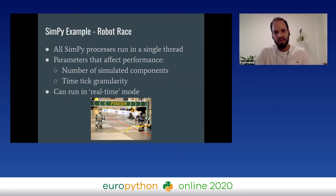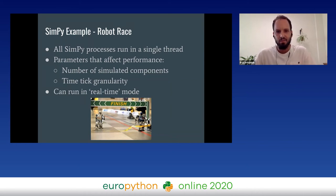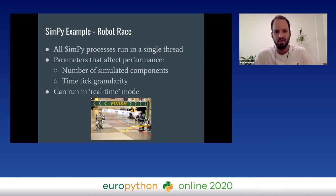An important point: all SimPy processes run in the same thread. As you could see, it uses Python generators and the environment runs each event one at a time. The parameters that affect simulation runtime are the number of components — the more components, the more calculations and the slower the simulation — and the time granularity: a bigger granularity means more calculations per second and a slower simulation.